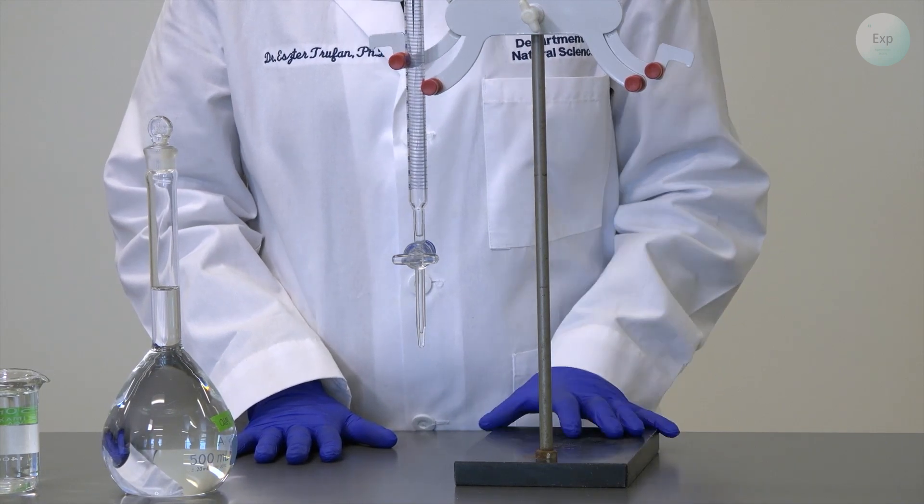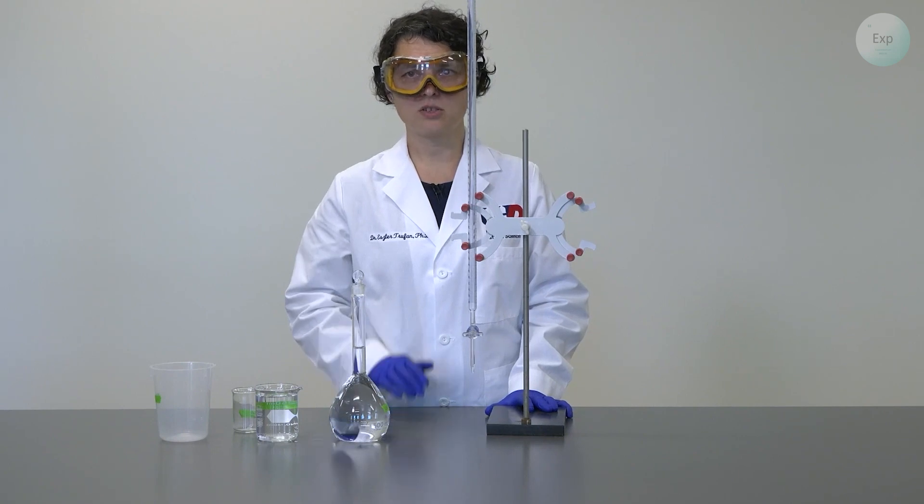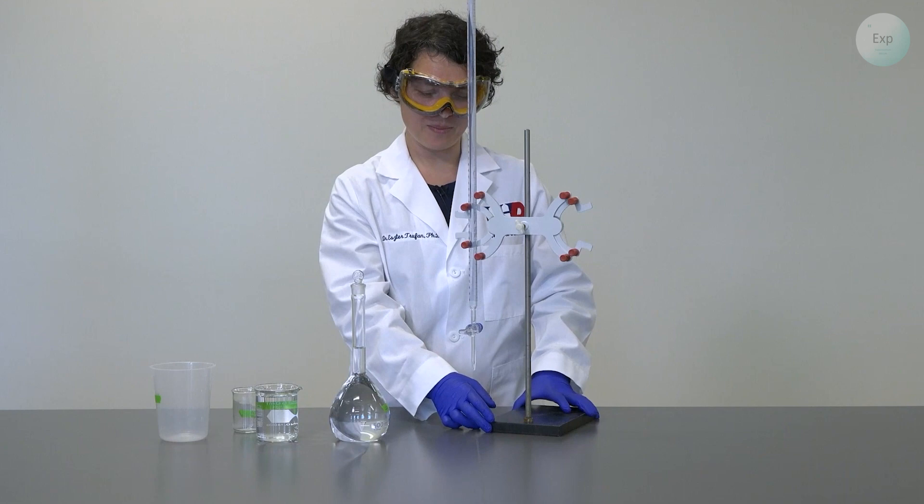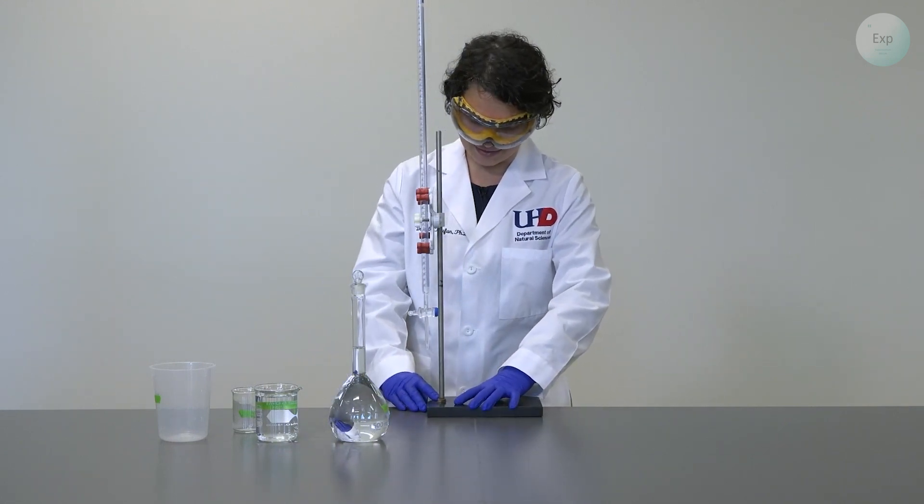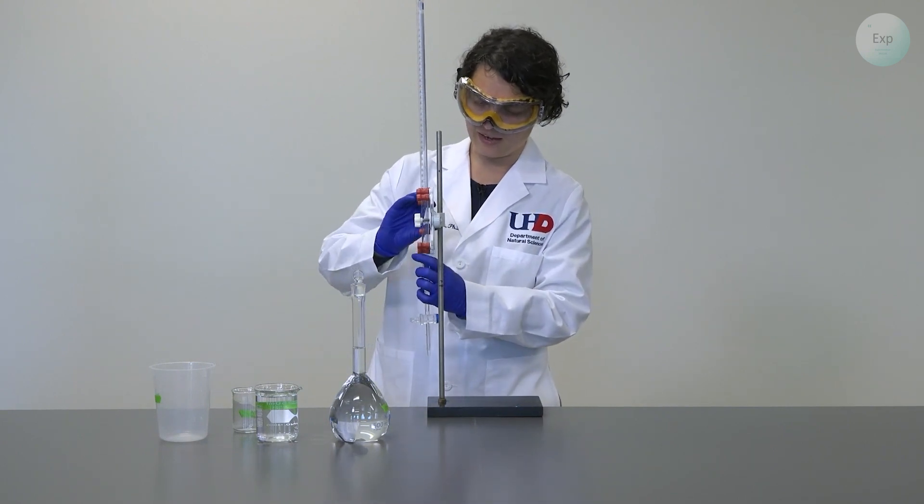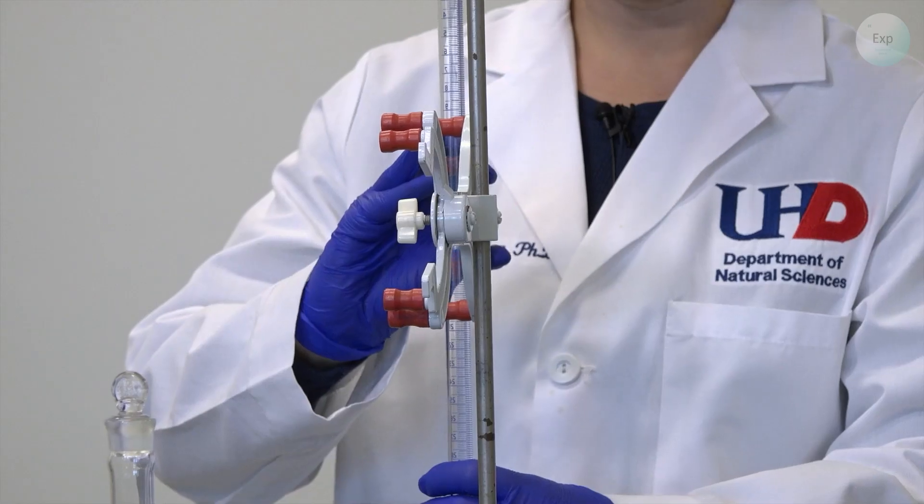The next thing we have to make sure of is that we don't pour anything above eye level. And to get to that point, we need to make sure that for those of us who are height challenged, the burette can be lowered, and we should be able to see the top of it.